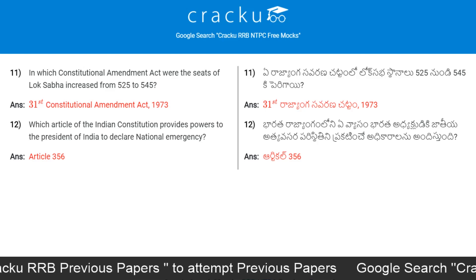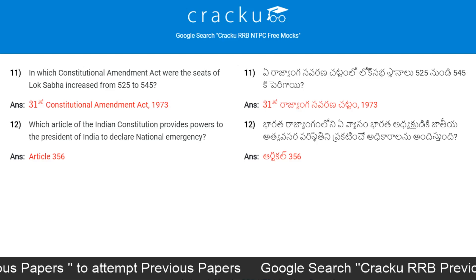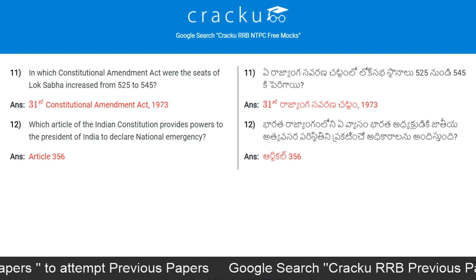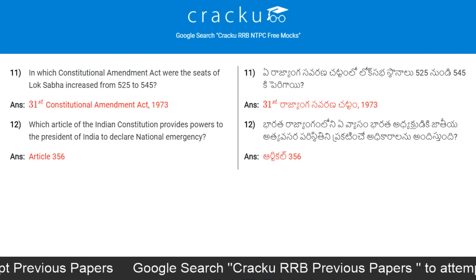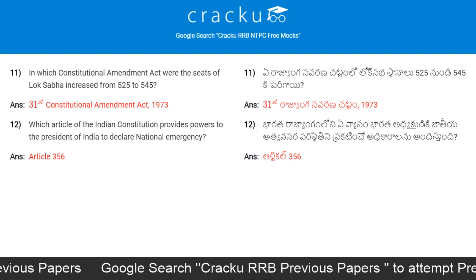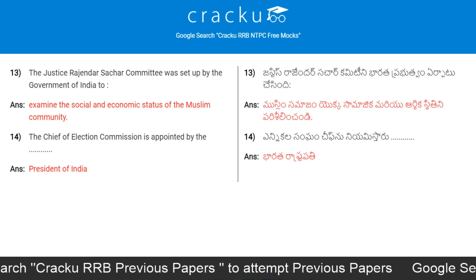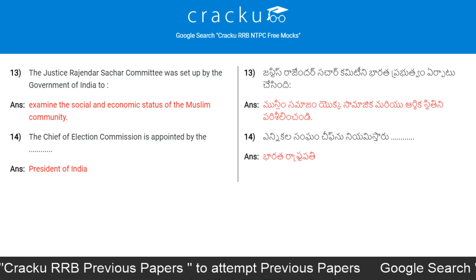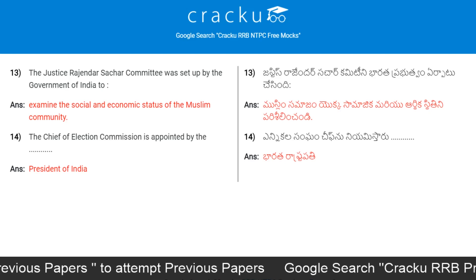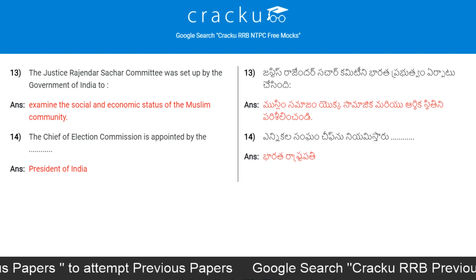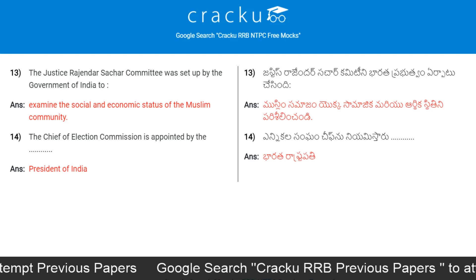Which article of the Indian constitution provides powers to the President of India to declare national emergency? Article 356. The Justice Rajendra Sachar Committee was set up by the government of India to examine the social and economic status of the Muslim community.